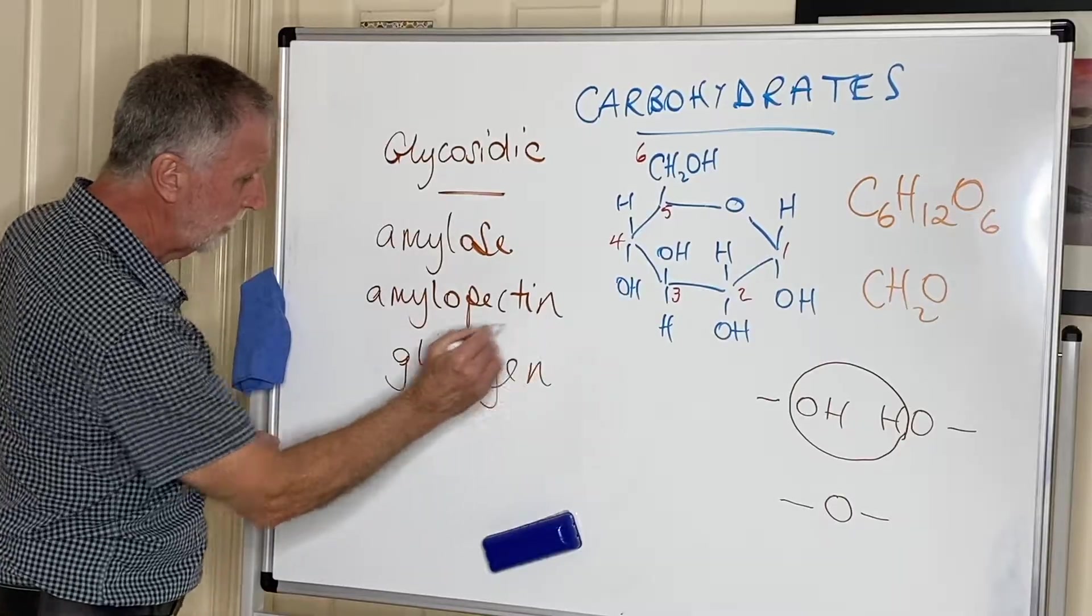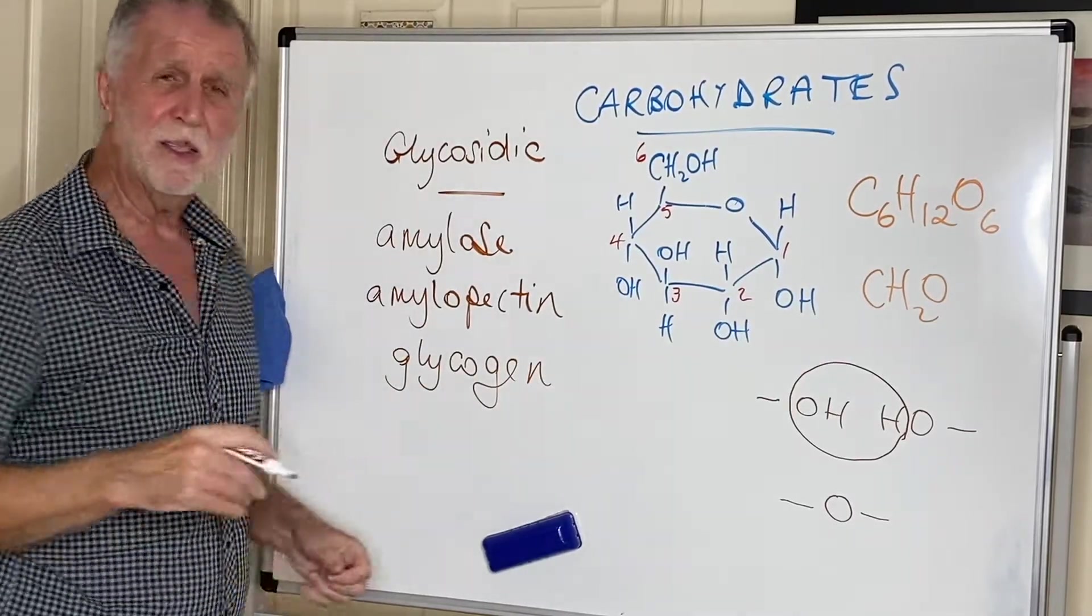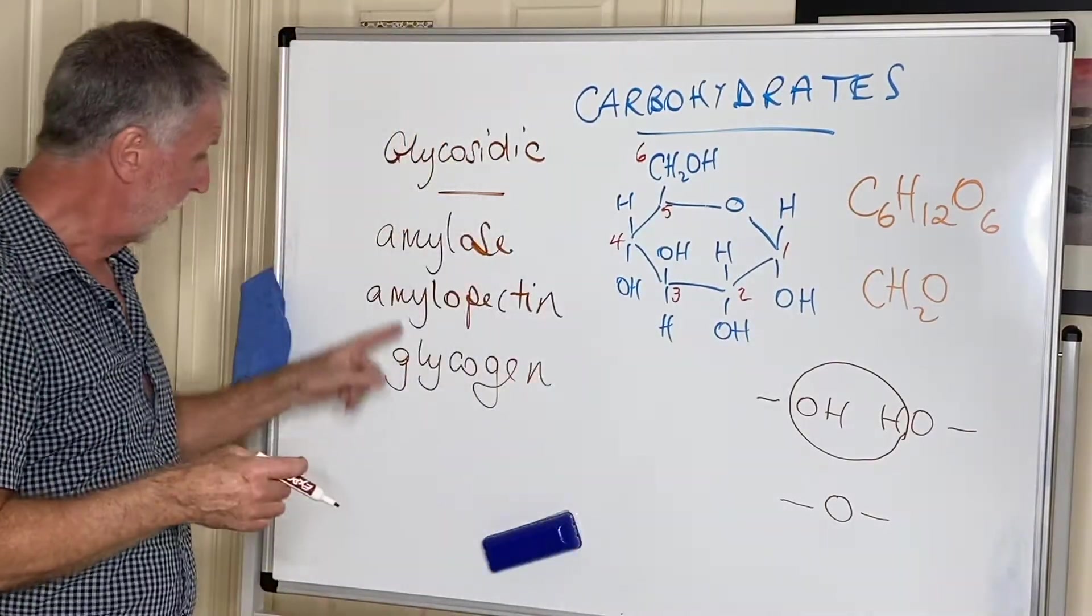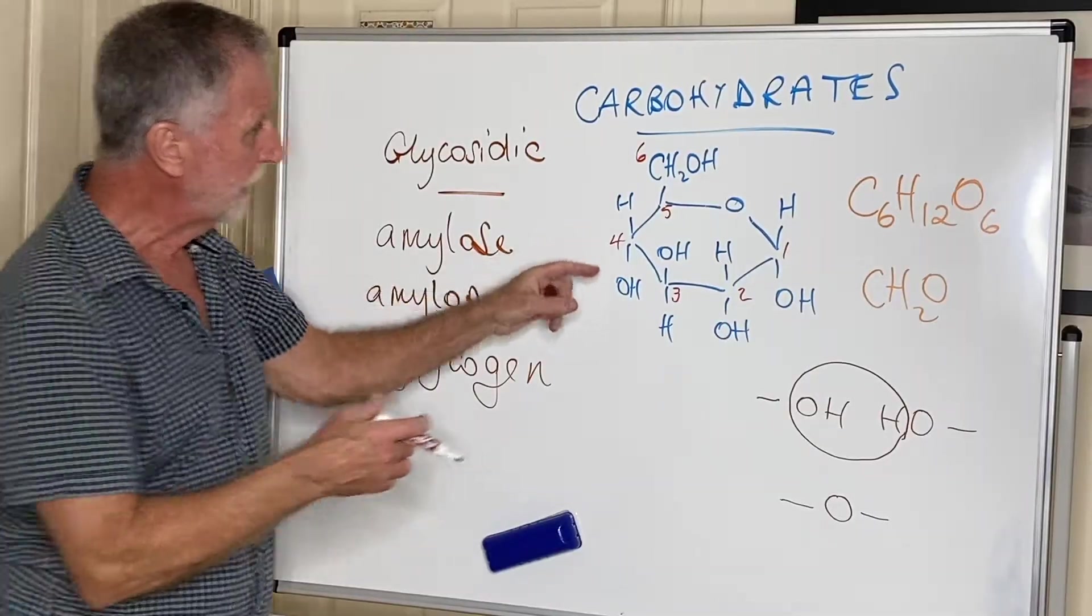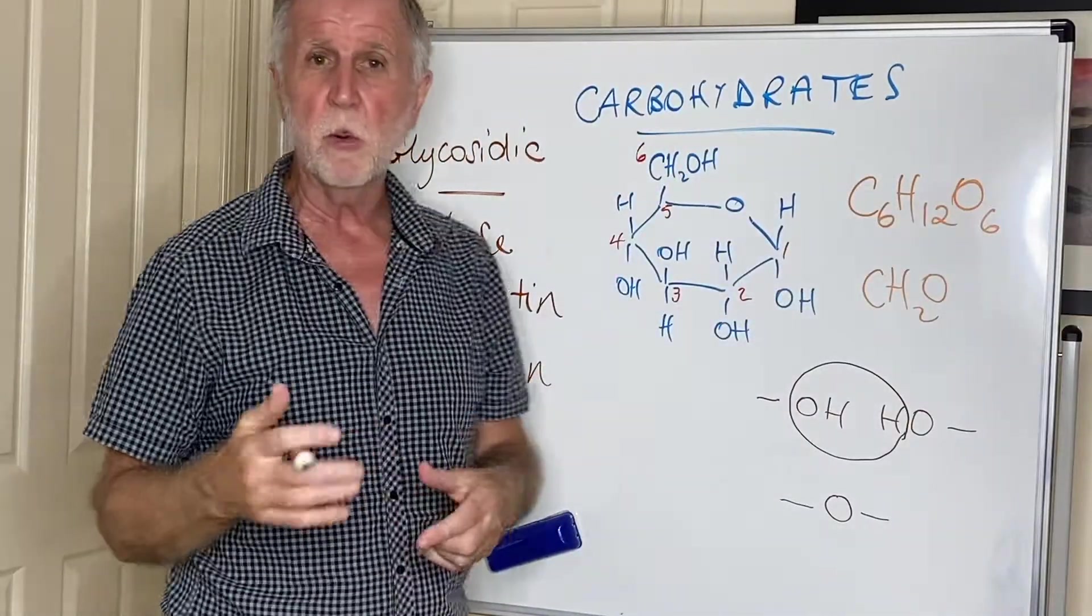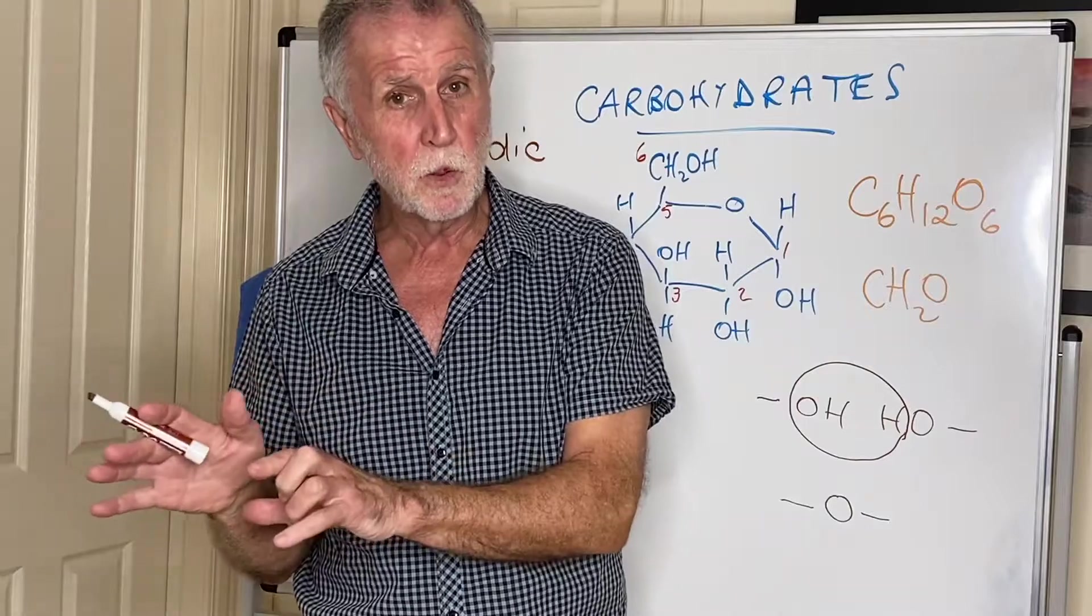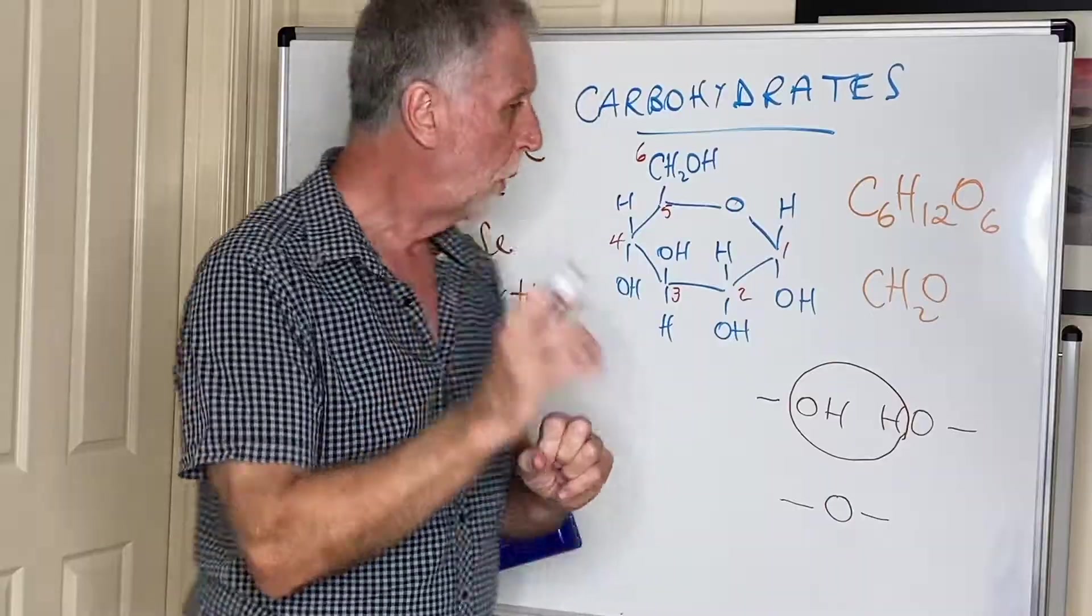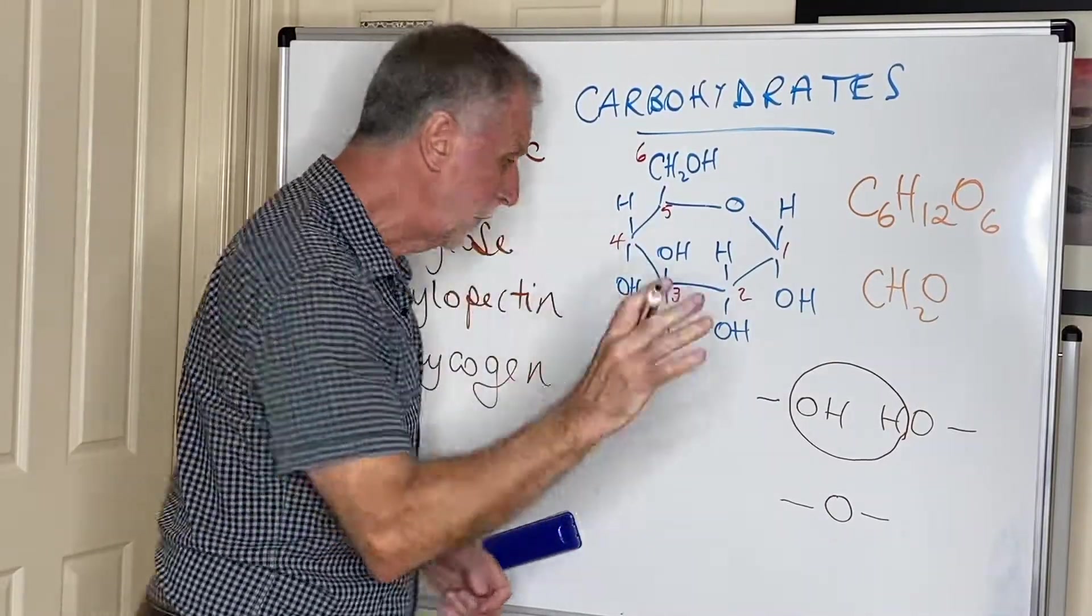But we don't use them all, so we keep some in storage for another time. Just like the plants store amylopectin, we store it as glycogen. And glycogen and amylopectin are virtually identical. The only difference is that glycogen has more branches than amylopectin. So whereas amylopectin maybe has a branch every 25, glycogen will probably have a branch every 10 or 15. But it's the same principle, and they are virtually identical molecules. Those are all alpha glucose units.